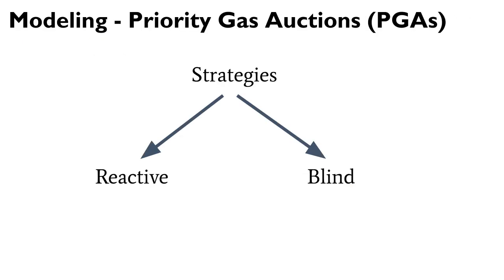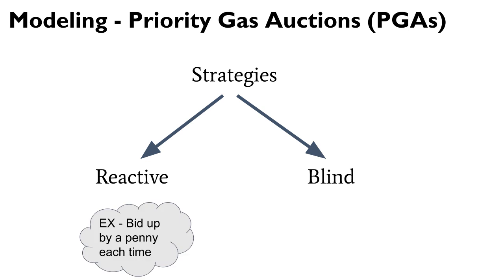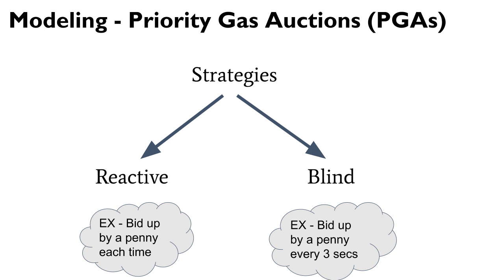So what do these strategies actually look like? We call this game priority gas auctions, because these strategies involve arbitrage bots bidding against one another on what is called gas price, or the transaction execution fee paid to miners in the Ethereum network. In these priority gas auctions, we observe two strategies on the live network. The first type is a reactive strategy, in which bots observe the behavior of other bots and choose bids that react to their behavior or estimated behavior. The second class are referred to as blind strategies, in which bots do not look at all at the actions of other bots and simply play according to a fixed and pre-programmed strategy.